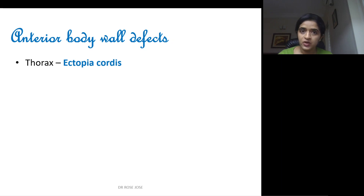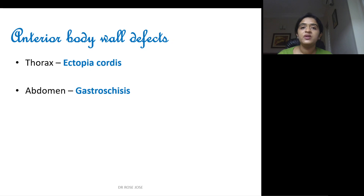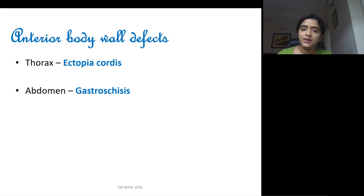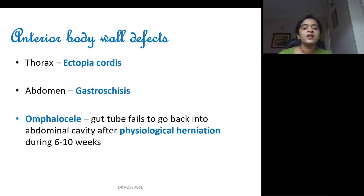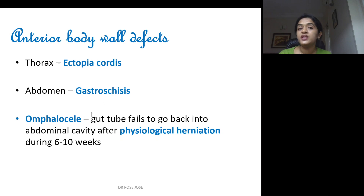When we talk about anterior body wall defects: if there is a defect in the anterior body wall of the thorax, you call that condition ectopia cordis — you will see the heart lying outside. If you have an anterior body wall defect in the abdomen, you call the condition gastroschisis. There is another entity known as omphalocele; if you don't know the real difference, you will get it wrong.